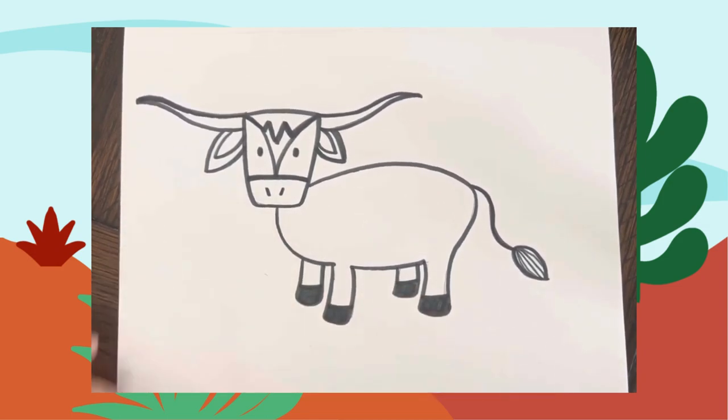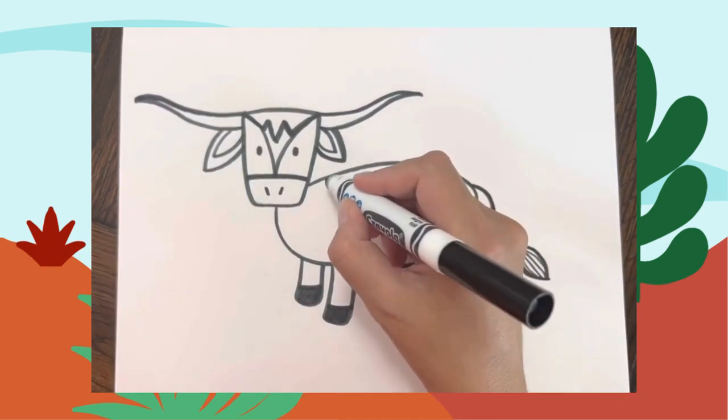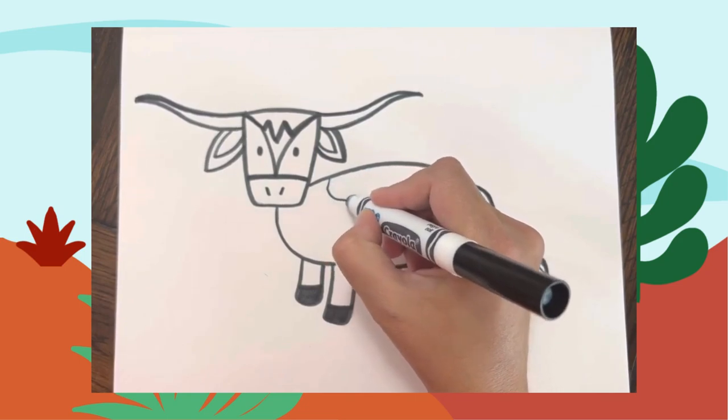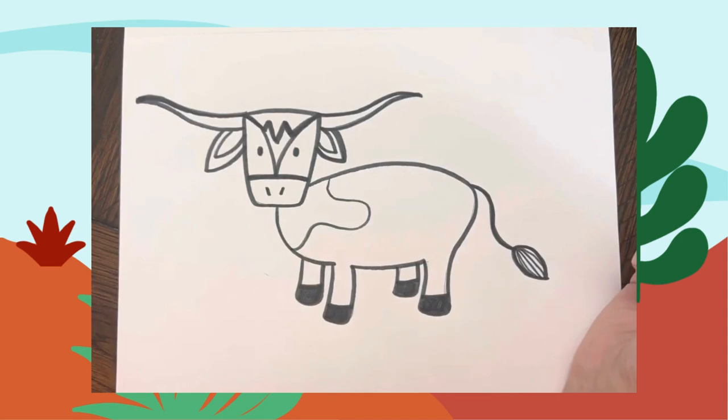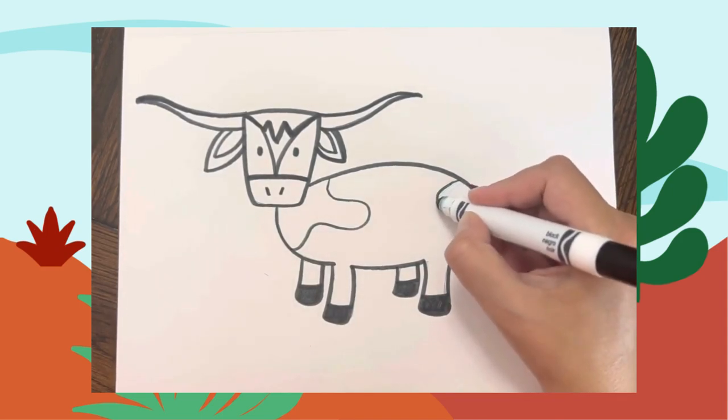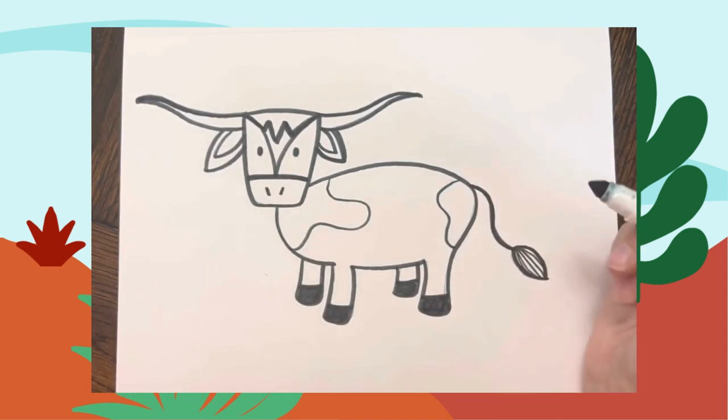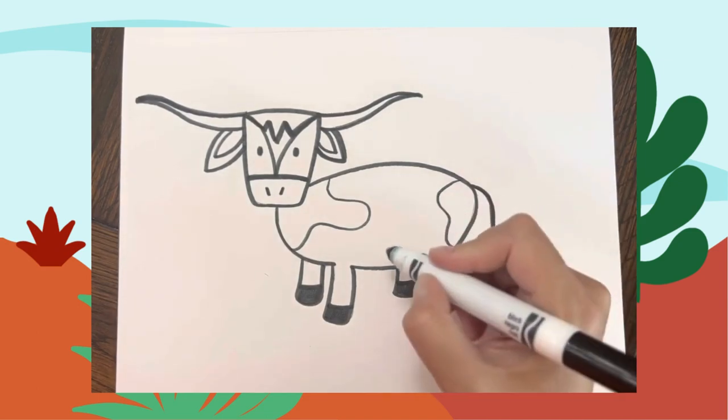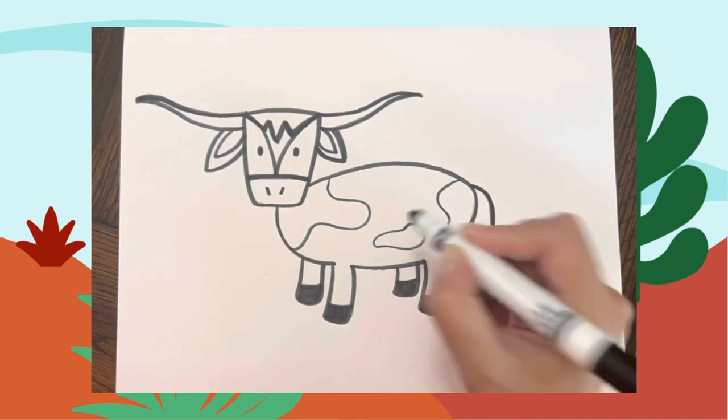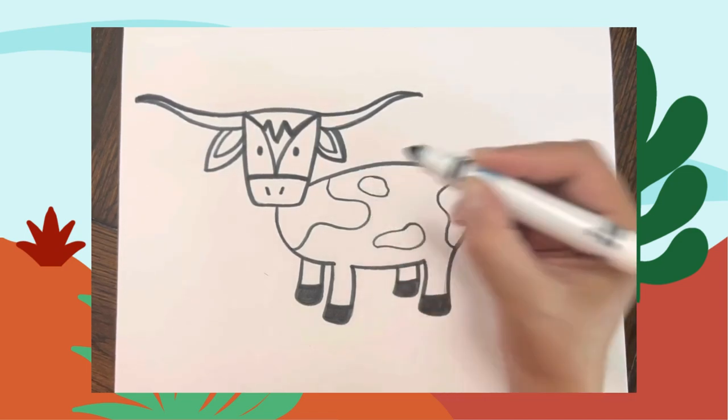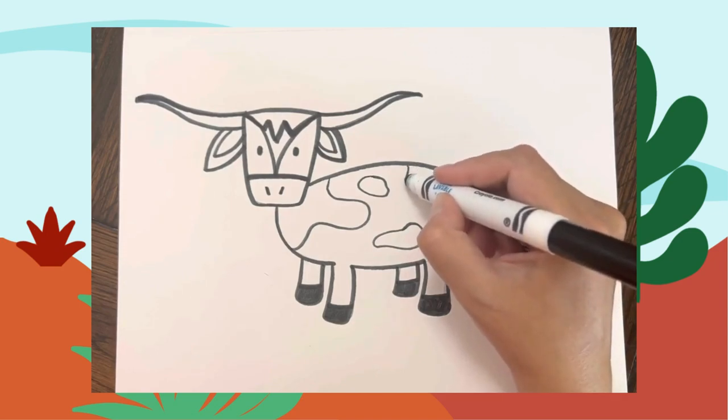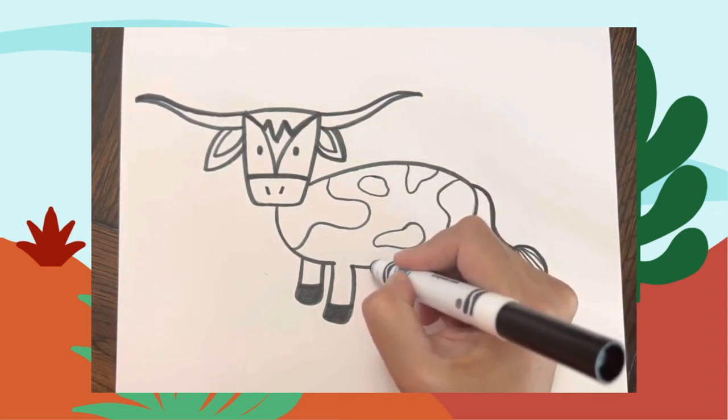All right, let's put some patterns or marks on our longhorn. I'm going to make some big splatter shapes—just some curvy lines around his body anywhere you want. Try to visualize what a real longhorn would look like: long shapes, some circle shapes. Yours do not have to look just like mine; you can make your shapes however you want.